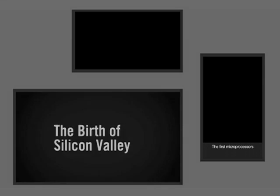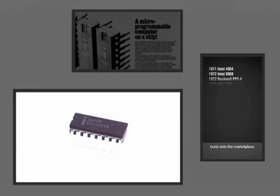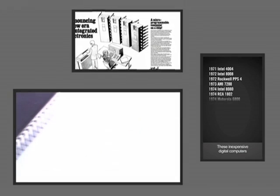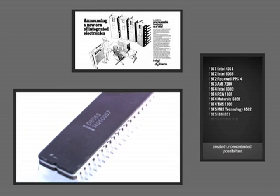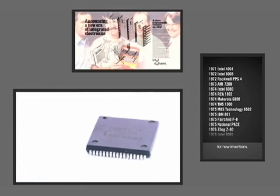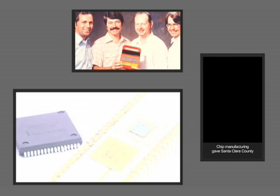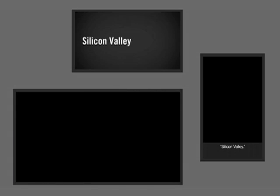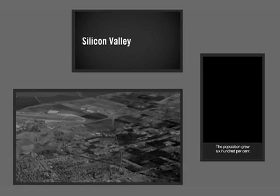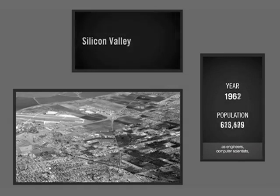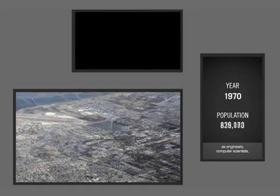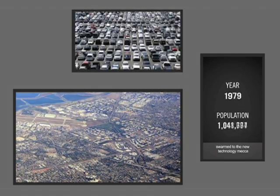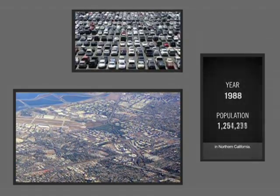The first microprocessors burst onto the marketplace. These inexpensive digital computers created unprecedented possibilities for new inventions. Chip manufacturing gave Santa Clara County a new identity, Silicon Valley. The population grew 600 percent as engineers, computer scientists, and high-tech workers swarmed to the new technology mecca in Northern California.